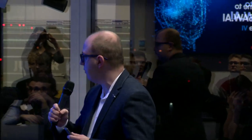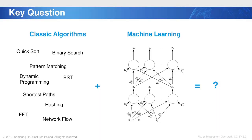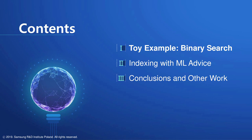My presentation is not only about machine learning, but also about classical algorithms. I'd like to show how we can have some interesting interplay between classical algorithms and machine learning — specifically, how we can enhance the performance of classical algorithms using machine learning techniques. I'll start with a toy example, then proceed to a real-world application, and finally conclude and mention other work in this area. This is a pretty recent area; the first paper was from last year, and since then there have been many papers on this topic.